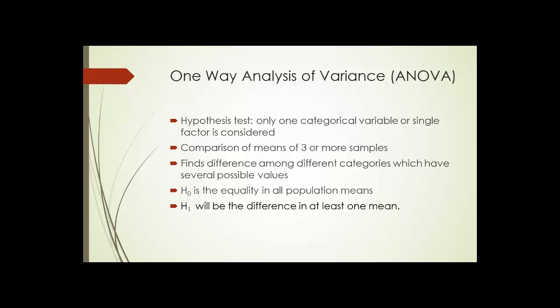A one-way analysis of variance involves a hypothesis test where only one categorical variable or single factor is considered. It's a comparison of means of three or more samples. If it were simply two samples, you would use a t-test.